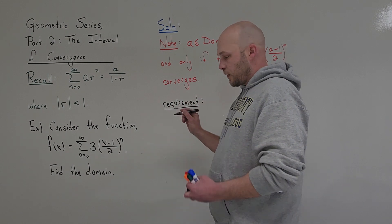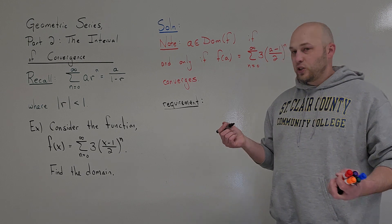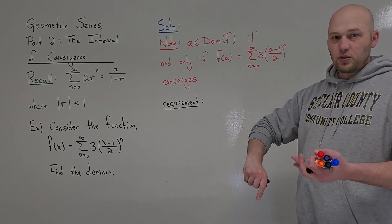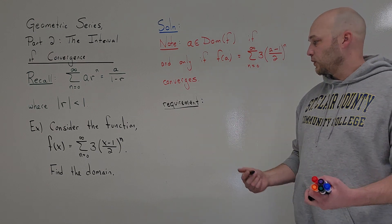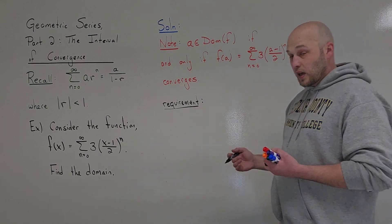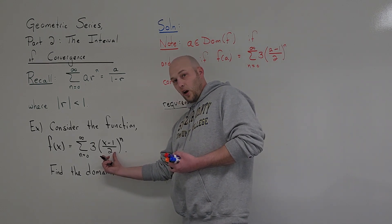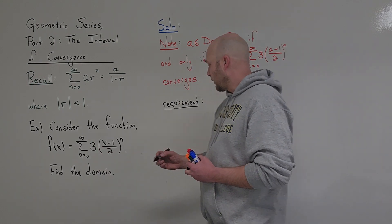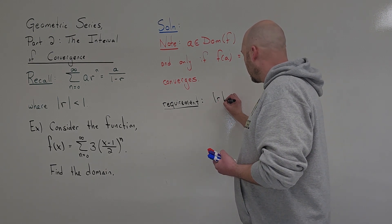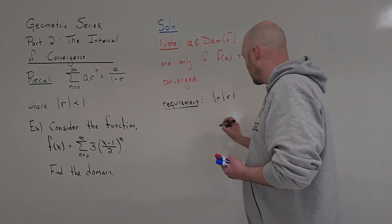When you look at functions in your pre-calc class and try to find the domain, you look at domain restrictions — you can't divide by zero, negatives can't be under radicals. In this case, the requirement is that the absolute value of r has to be less than 1. So r gets replaced with (x minus 1) over 2.